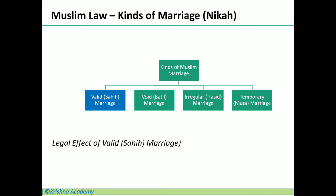In the coming slides we will see the meaning of these different types of nikah and their legal effects. As discussed in a previous video on Muslim marriage, the basic purpose of nikah is the union of sexes and legalizing procreation — legitimatizing the children — which means children from the marriage will inherit the property of the parents. Now let us start with the first type: valid or sahih marriage.